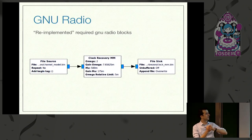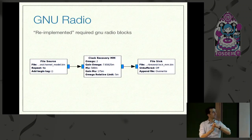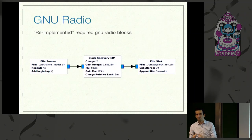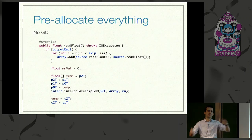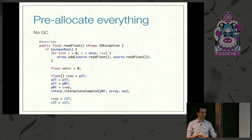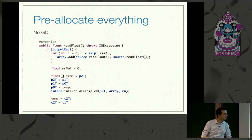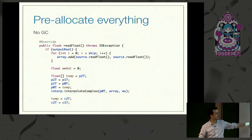There are differences between GNU radio and my implementation. First, I'm writing in Java, which has interesting peculiarities — garbage collection and memory management. You can't just allocate and deallocate buffers as that creates pressure on the garbage collector. So I pre-allocate everything. My garbage collector just doesn't work at all — these blue things in the diagram are all pre-allocated. Normally there's no new operator and nothing is dynamically allocated.